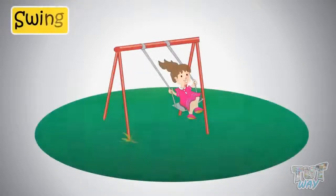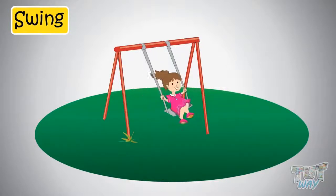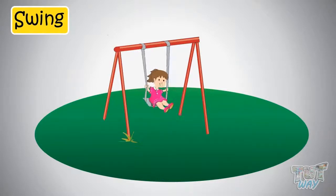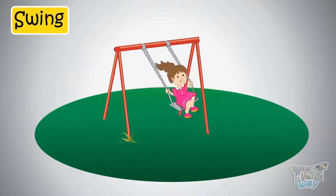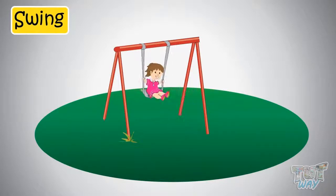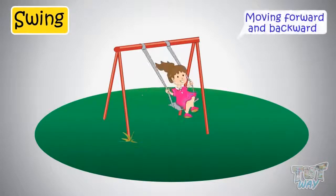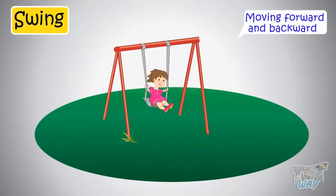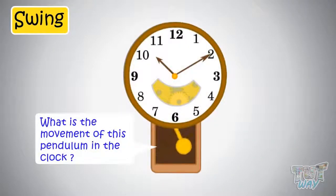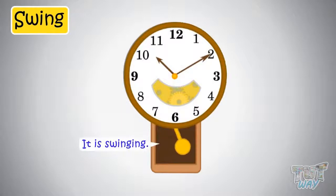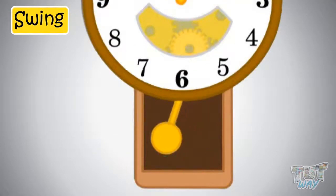Now here is a swing — another movement is called swinging. This is a common swing that kids enjoy. This is the movement forwards and backwards. What is the movement of this pendulum in the clock? It is swinging from left to right and right to left.